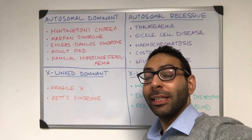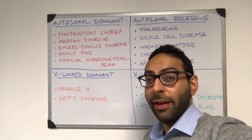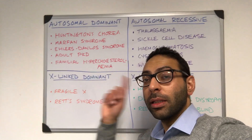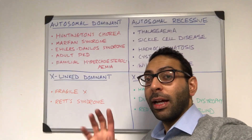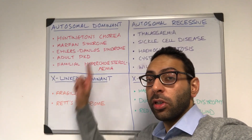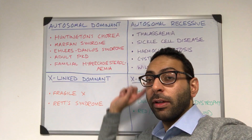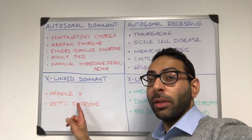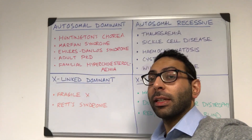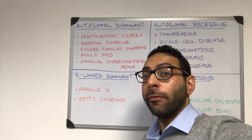I often get asked about genetic conditions and what goes with what type of inheritance. So I thought I'd do a quick video on the four main types of inheritance and some common examples not to forget. So you've got autosomal dominant, autosomal recessive, X-linked dominant, and X-linked recessive. Let's start with autosomal dominant first.